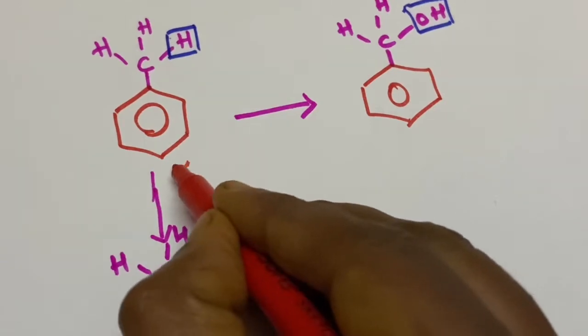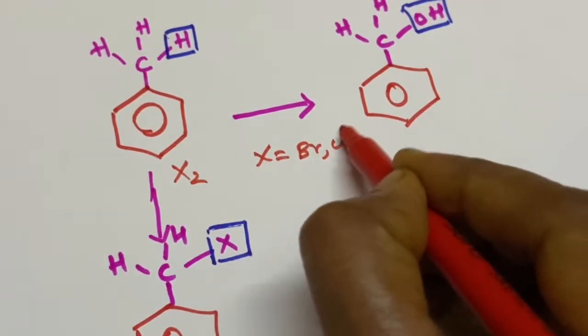So we have to use halogen where X is equal to bromine, chlorine, or iodine.